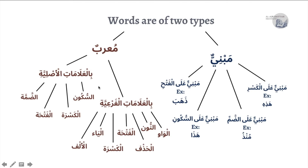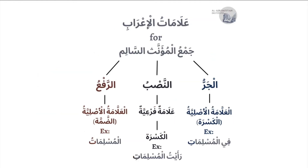An example of a word that takes a combination is the Jama' Mu'annath Salim — the sound feminine plural. The sound feminine plural is any plural noun that ends with '-at'. For example: 'Sama'' (sky) → 'Samawat' (skies); 'Muslima' → 'Muslimat' (Muslim women, plural); 'Mudarrisatun' (teacher, feminine) → 'Mudarrisat' (teachers, plural). These are examples of the Jama' Mu'annath Salim.